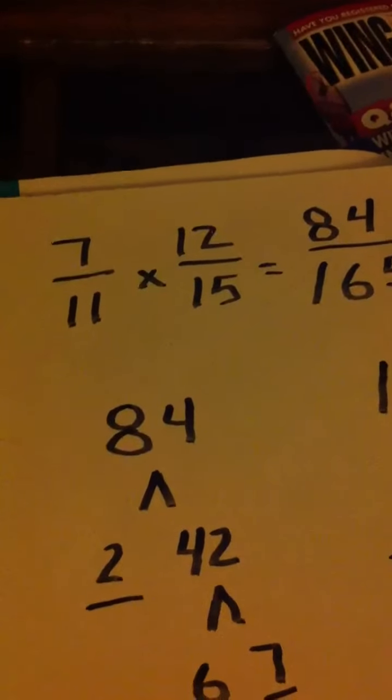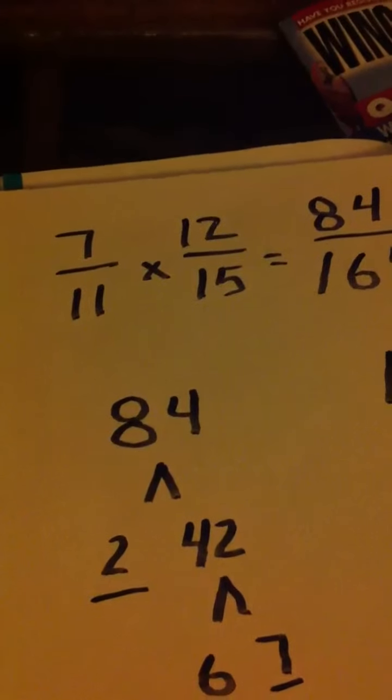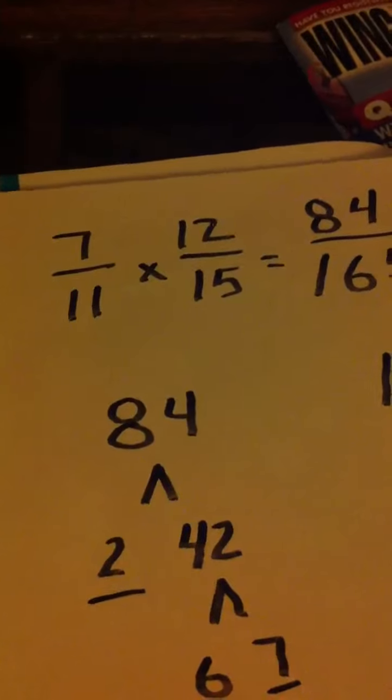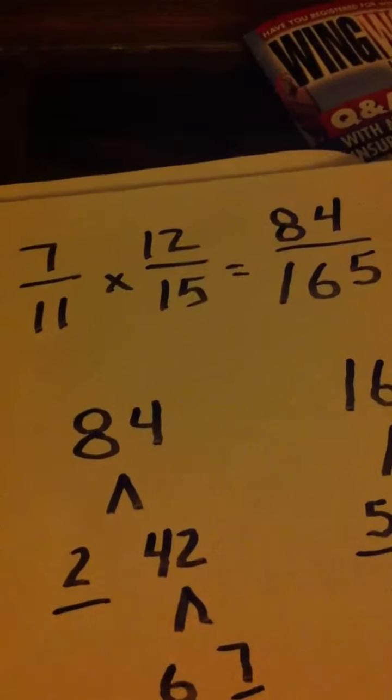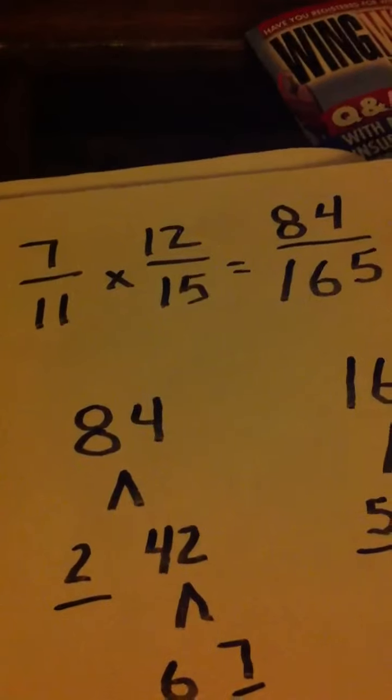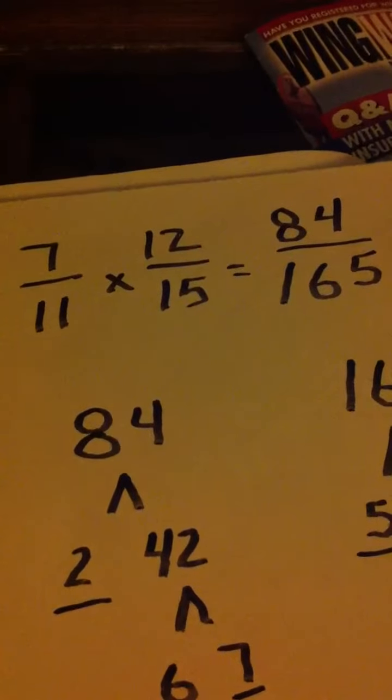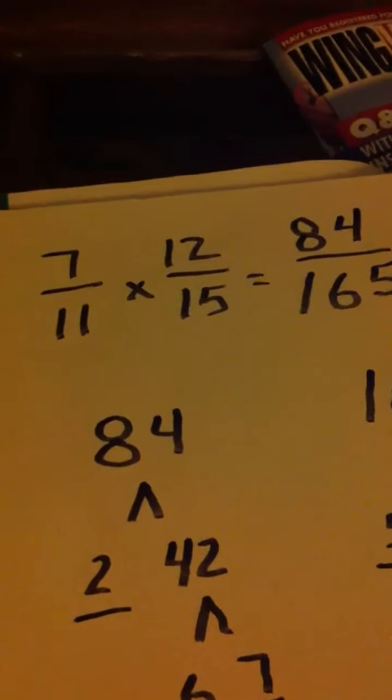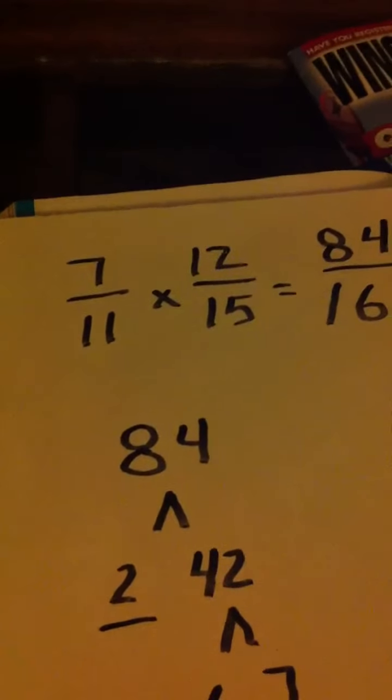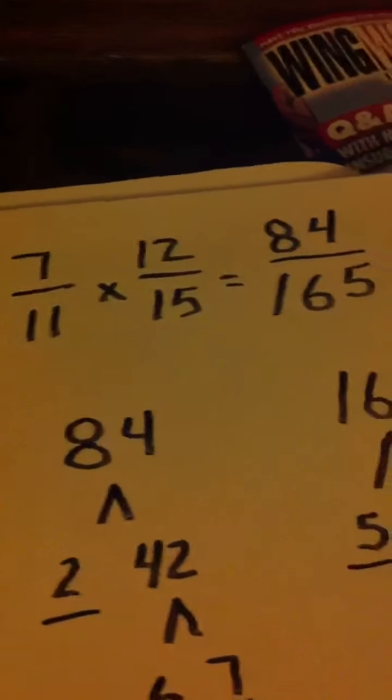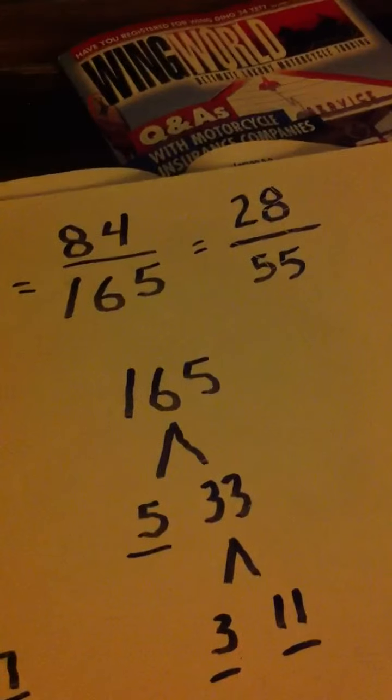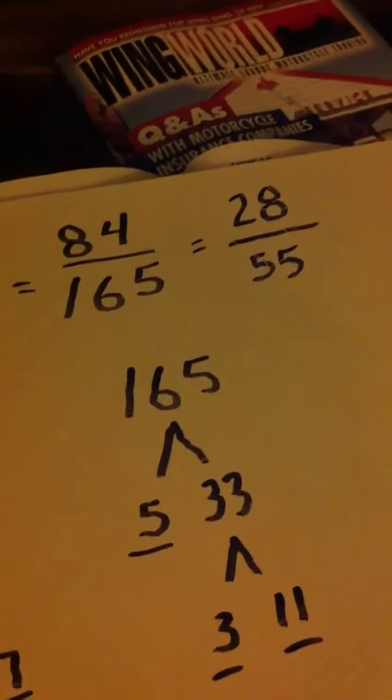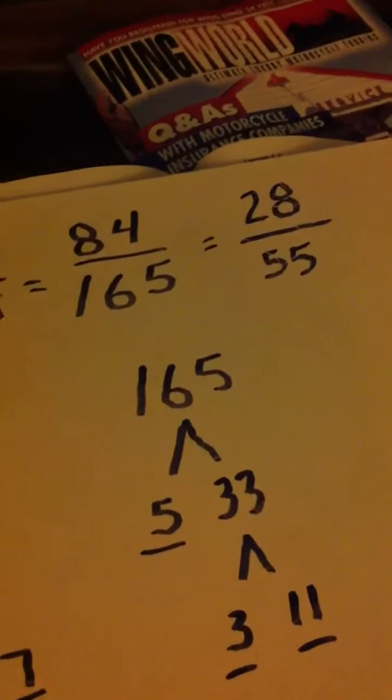I hope that helps and I guess the moral of the story would be to just pay attention and go slow and be really careful because 7 11ths times 12 15ths is actually 28 over 55. You guys have a good evening and great day. Y'all see ya at school.